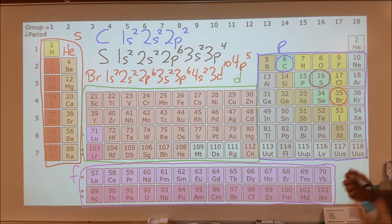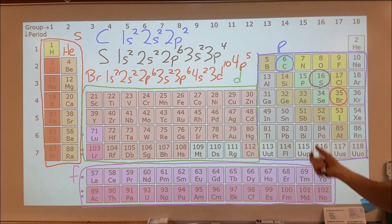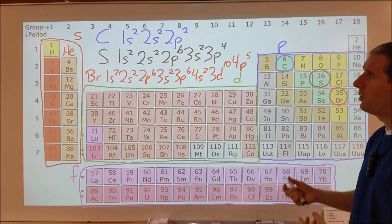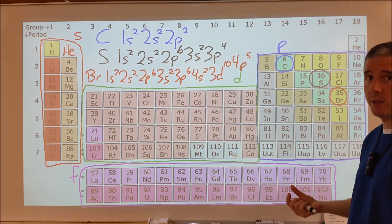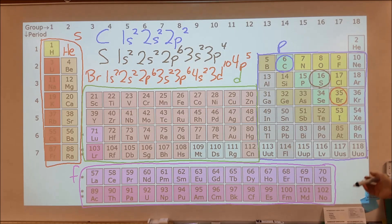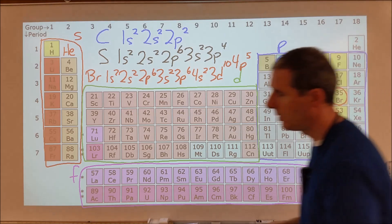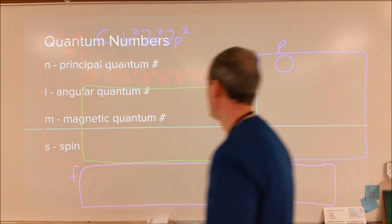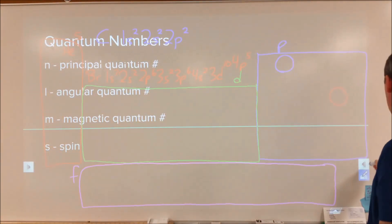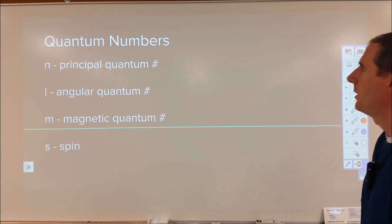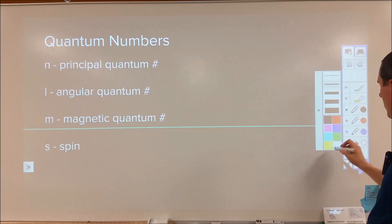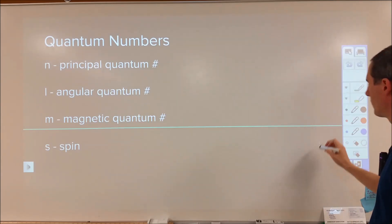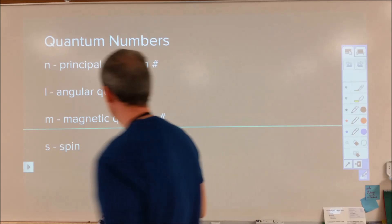That's how you do an electron configuration. But the next critical step is why are you doing these? What is the point? To answer that question we need to go a little deeper into chemistry, and we need to look at something called quantum numbers. Electron configurations are descriptions of the electrons in an atom.